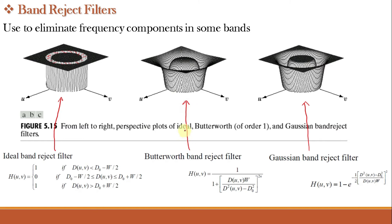The Butterworth band reject filter is given by its equation where W is the width of rejection and n is the order of the filter. For order 1 it involves only a square term. The Gaussian band reject filter is given by its corresponding equation. Here D is the Euclidean distance, D0 is the cutoff frequency, W is the width of rejection, and n is the order. We will use the Gaussian band reject filter to remove noise from an image in MATLAB.